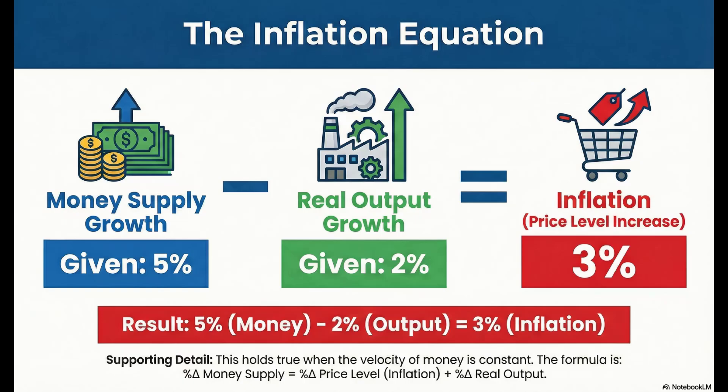This is why modern central banking is so obsessed with psychology and expectations, not just printing money. Here's a final thought to explore on your own: what if the opposite happens? In times of high inflation, people sometimes get scared their money will be worthless tomorrow, so they try to spend it faster — they treat it like a hot potato again. Challenge yourself: if velocity suddenly increases by 2% on top of our original numbers — 5% money growth, 2% real growth, and now a 2% increase in the speed of spending — see how that changes the inflation prediction. You'll understand why velocity is the wild card in this classic economic theory. Thanks for taking the deep dive with us.